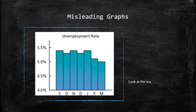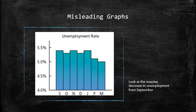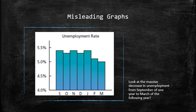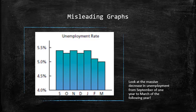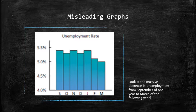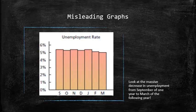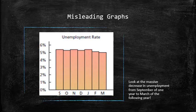Look at the massive decrease in unemployment from September of one year to March of the following year. The decrease looks significant only because most of the histogram is missing due to the cutoff on the vertical axis. If you look at the whole picture, the decrease from 5.4% to 5.0% doesn't seem that impressive.